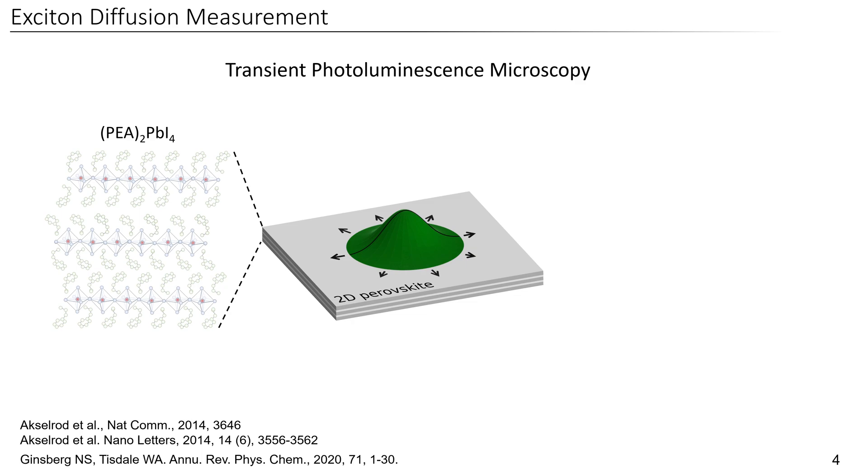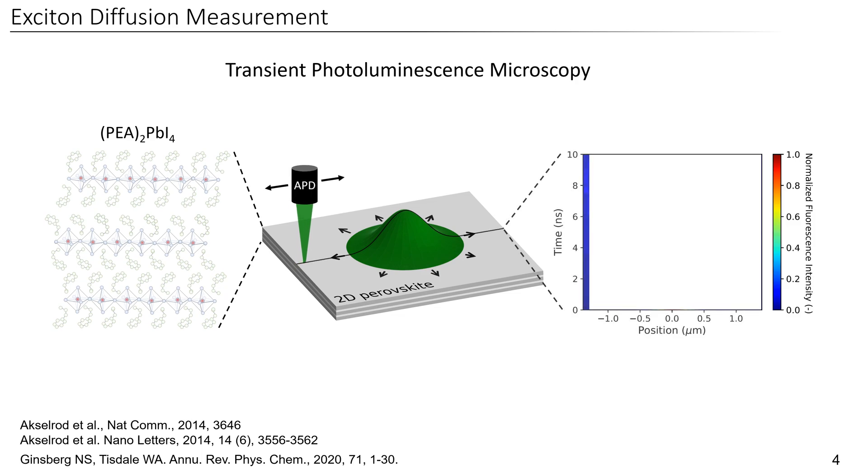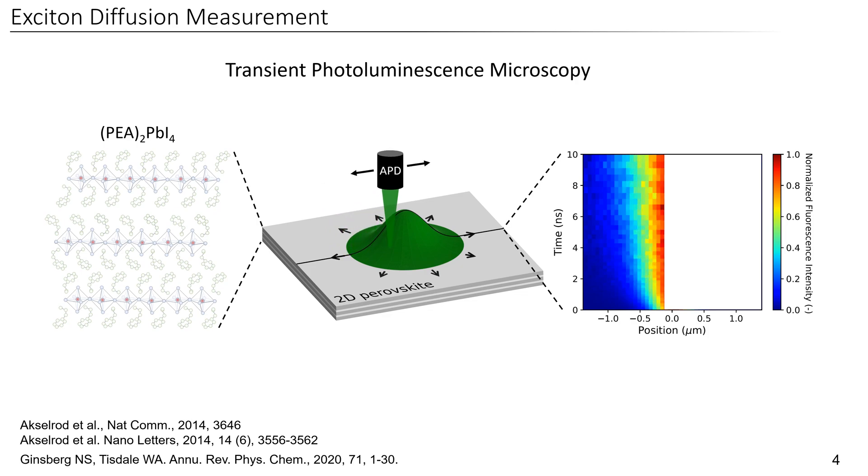Now we are able to measure this time-dependent broadening by measuring the fluorescent emission from this exciton distribution, which is proportional to the exciton density at the fluences that we use. We do this by using a scanning avalanche photodiode, which gives us the spatial resolution through the scanning and the time resolution by the photon counting of the avalanche photodiode.